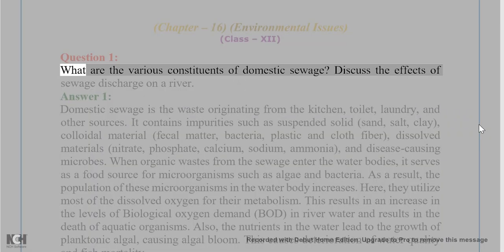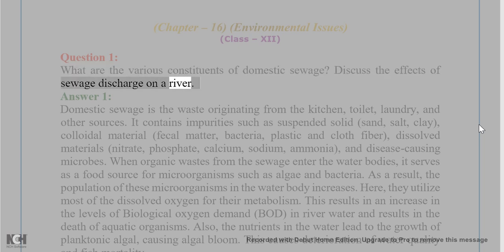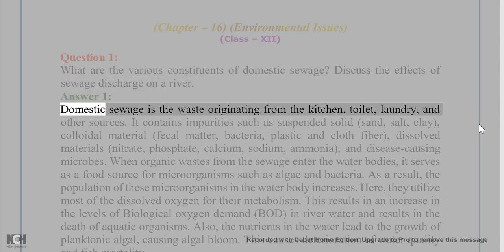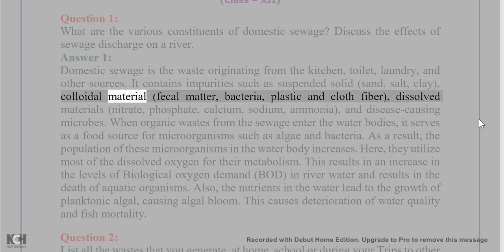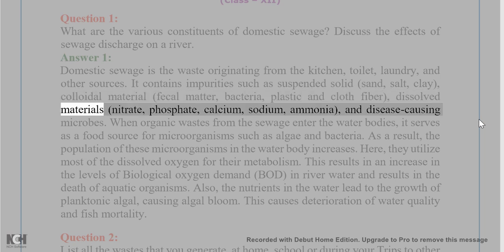Question 1: What are the various constituents of domestic sewage? Discuss the effects of sewage discharge on a river. Answer: Domestic sewage is the waste originating from the kitchen, toilet, laundry, and other sources. It contains impurities such as suspended solids: sand, salt, clay, colloidal material, fecal matter, bacteria, plastic, and cloth fiber. Dissolved materials include nitrate, phosphate, calcium, sodium, and ammonia, along with disease-causing microbes.